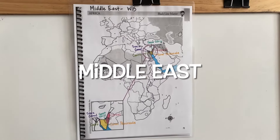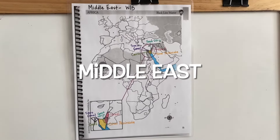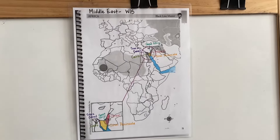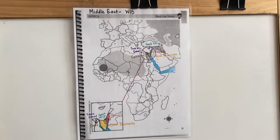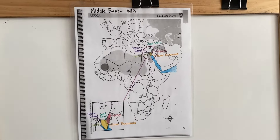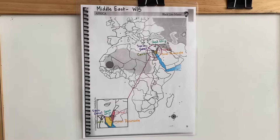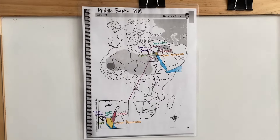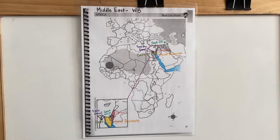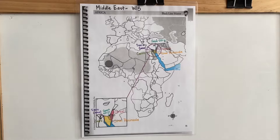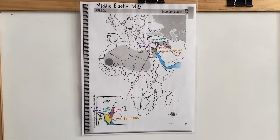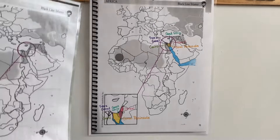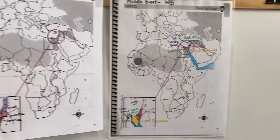Cycle one, week 15 geography. Today we are going to be learning about the Middle East, and this map might look vaguely familiar because if we think all the way back to week three when we learned the Hebrew Empire, we learned about the same area.